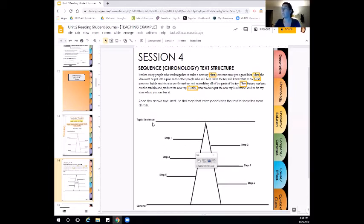So the topic sentence, the sentence that tells us what this passage is mostly about, I am noticing is pretty much our first sentence in the paragraph. It takes many people who work together to make a new toy. So I'm going to put that in this line for the topic sentence. Working together to make a new toy.